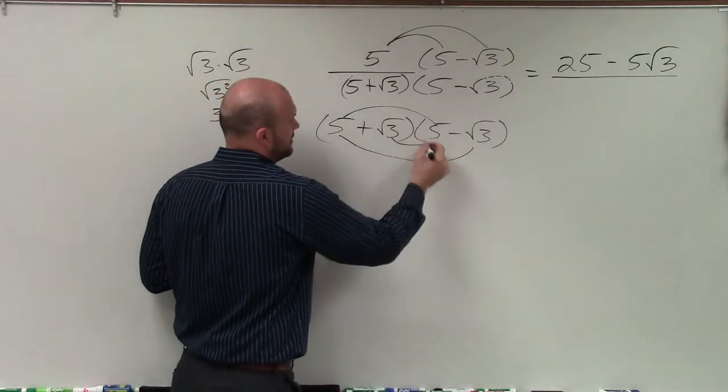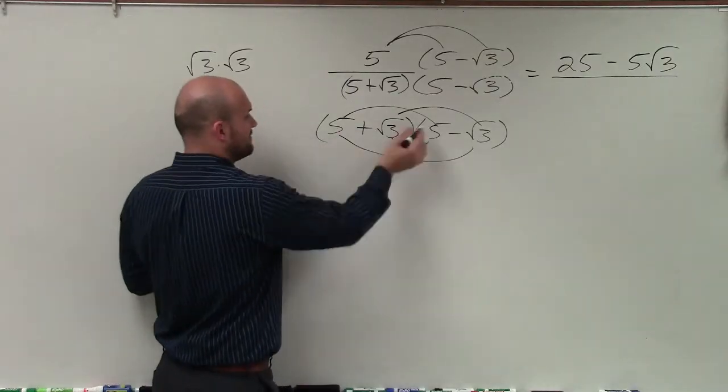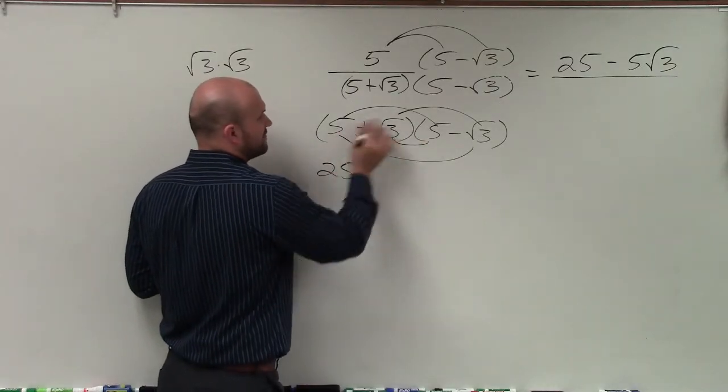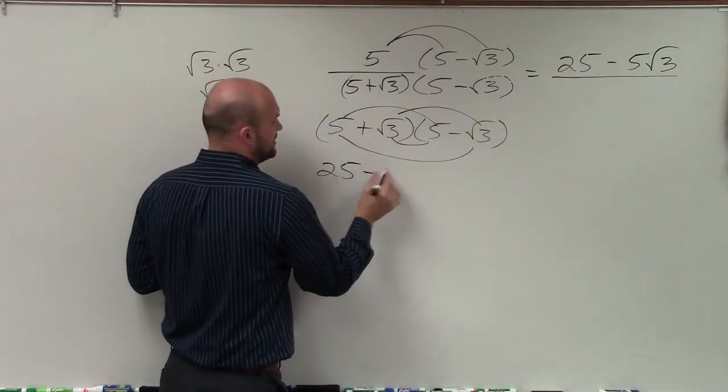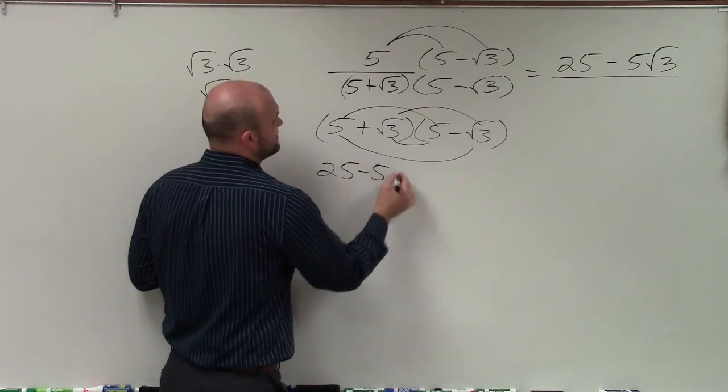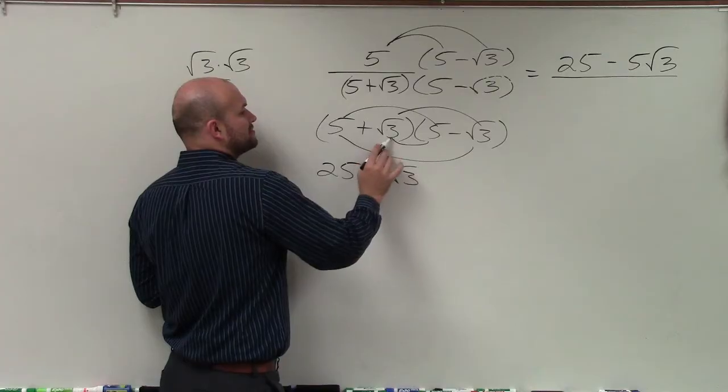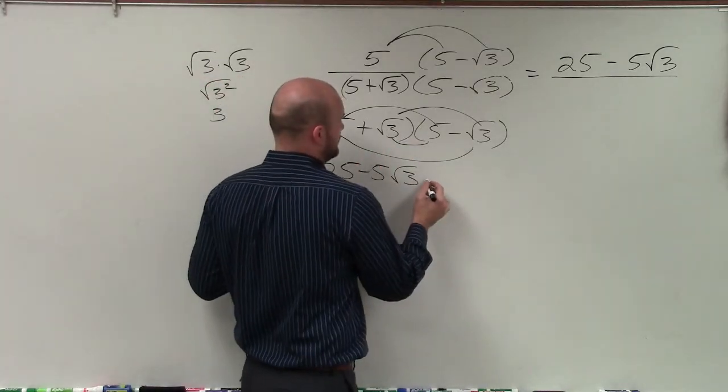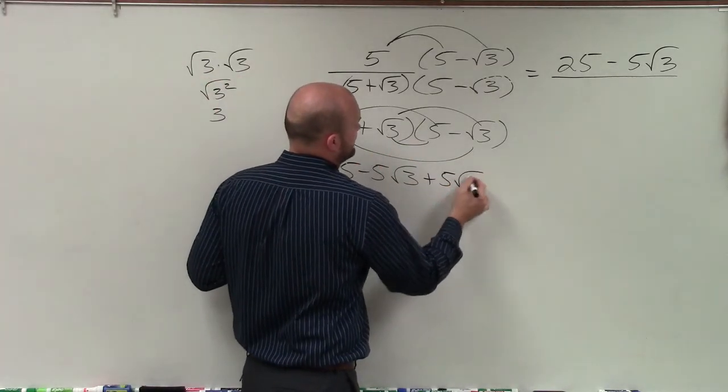outer, inner, and last. So 5 × 5 = 25. 5 times negative √3 = negative 5√3. √3 times 5 = positive 5√3.